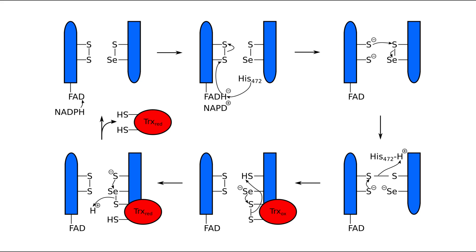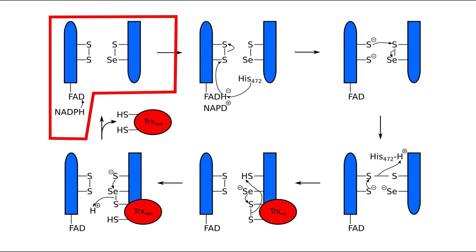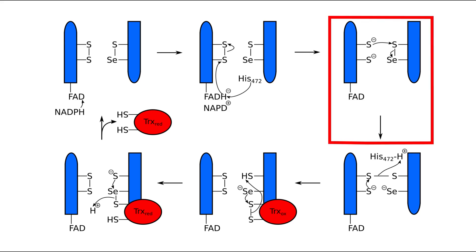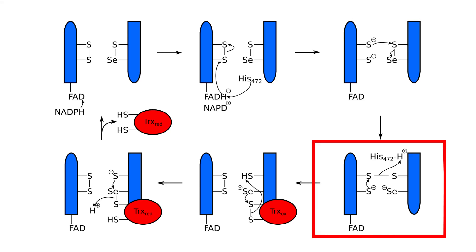The full mechanism of thioredoxin reductase proceeds as follows. First, NADPH binds and gives its electrons to FAD, forming a charge transfer complex. Next, a histidine residue abstracts the hydrogen from FAD, and the electrons are donated to the N-terminus disulfide to form thiolate ions. One thiolate then attacks the sulfur of the C-terminus selenyl sulfide of the second subunit, reducing the selenyl sulfide bond and forming a disulfide bond between the two subunits. Next, the remaining thiolate at the N-terminus redox center attacks the neighboring sulfide, restoring the oxidized N-terminus and fully reducing the C-terminus.